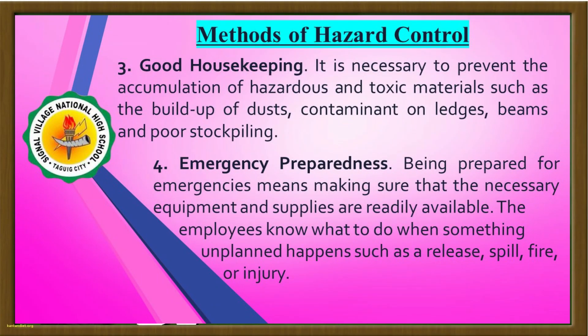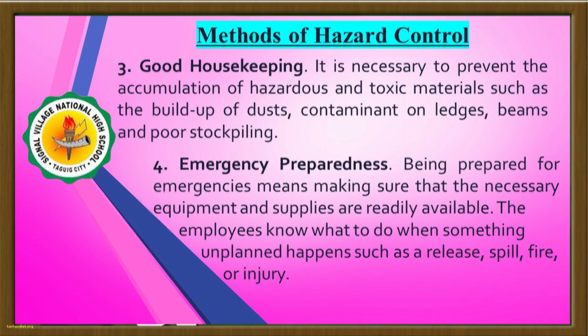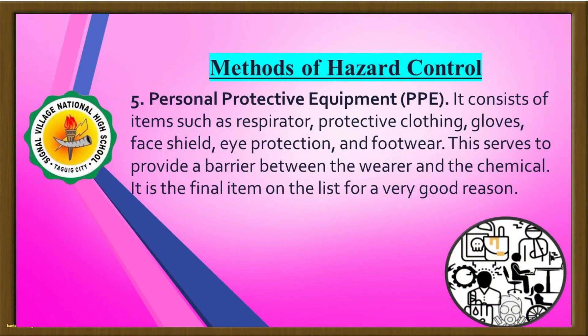Good housekeeping is necessary to prevent the accumulation of hazardous and toxic materials such as buildup of dust, contaminants, and poor stockpiling. Emergency preparedness means making sure that the necessary equipment and supplies are readily available and that employees know what to do when something unplanned happens, such as releases, spills, fires, or injury. Personal protective equipment or PPE consists of items such as respirators, protective clothing, gloves, face shields, eye protection, and footwear. It serves to provide a barrier between the wearer and chemicals.